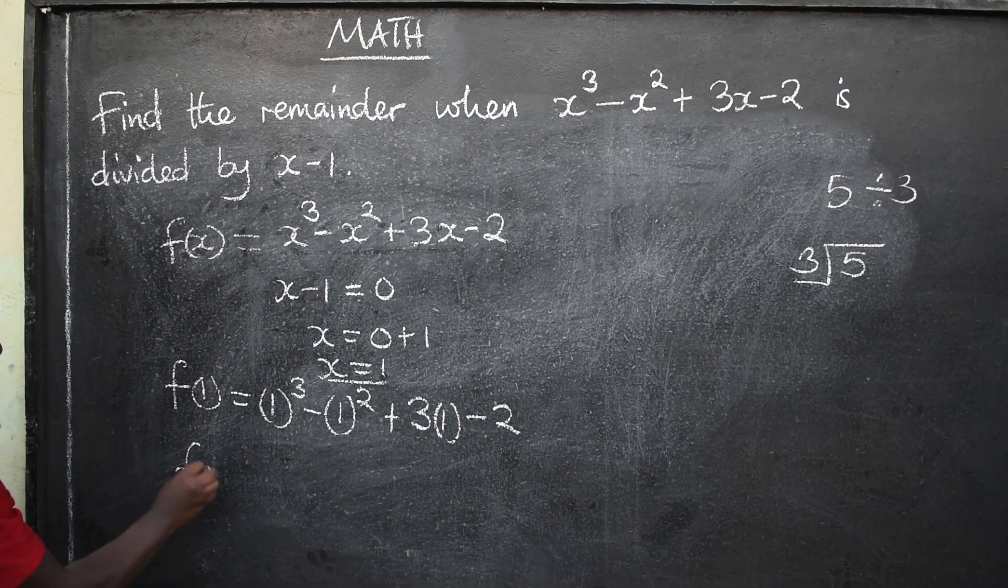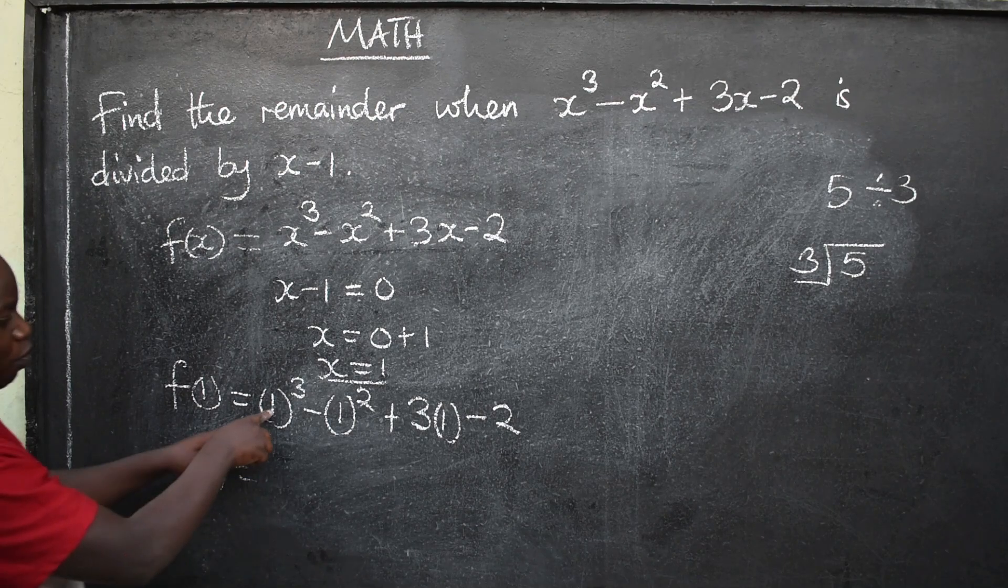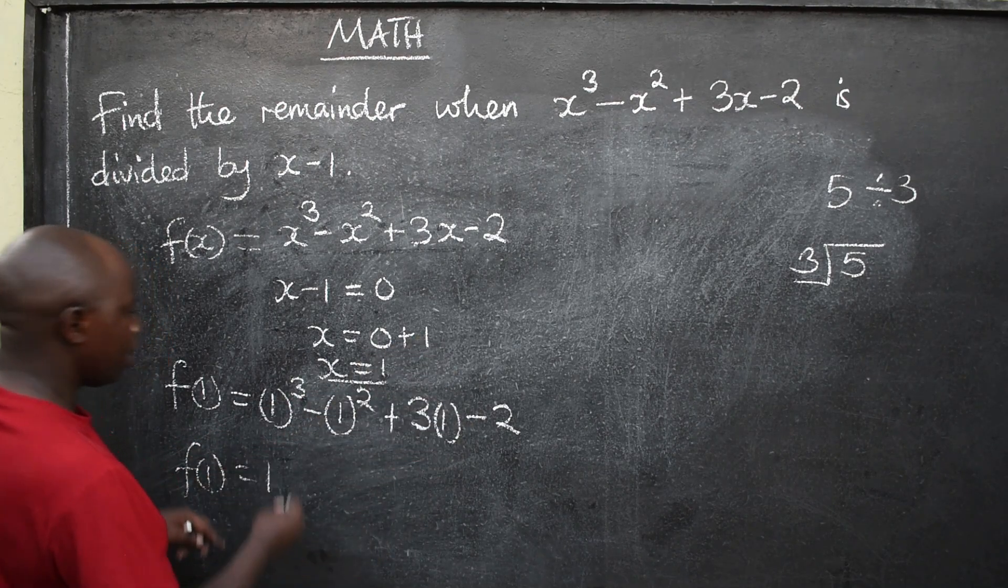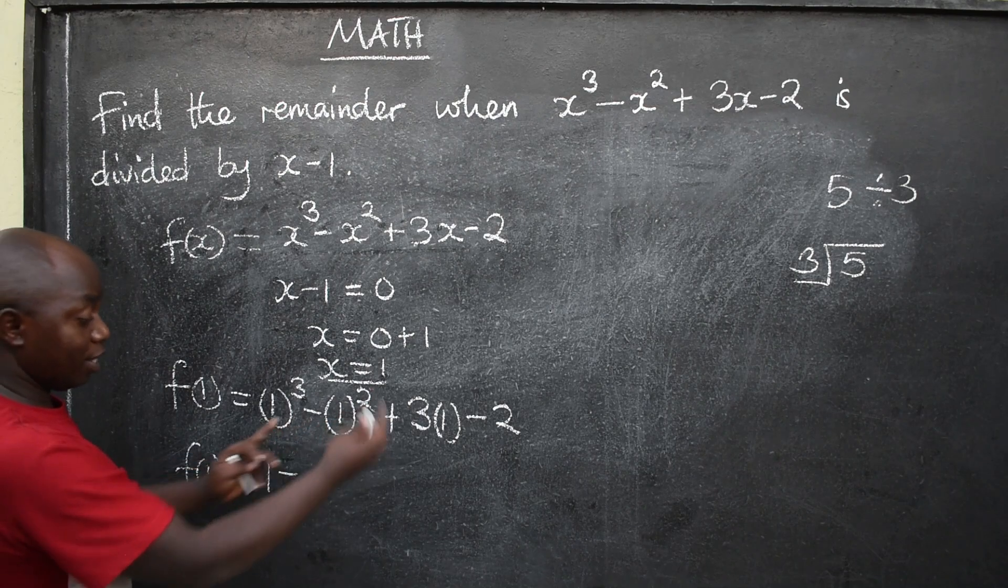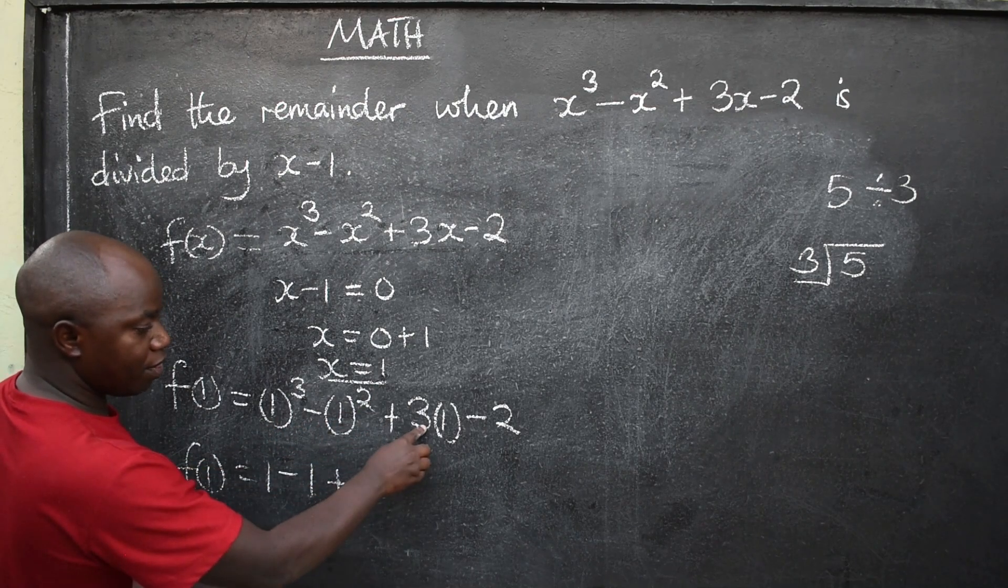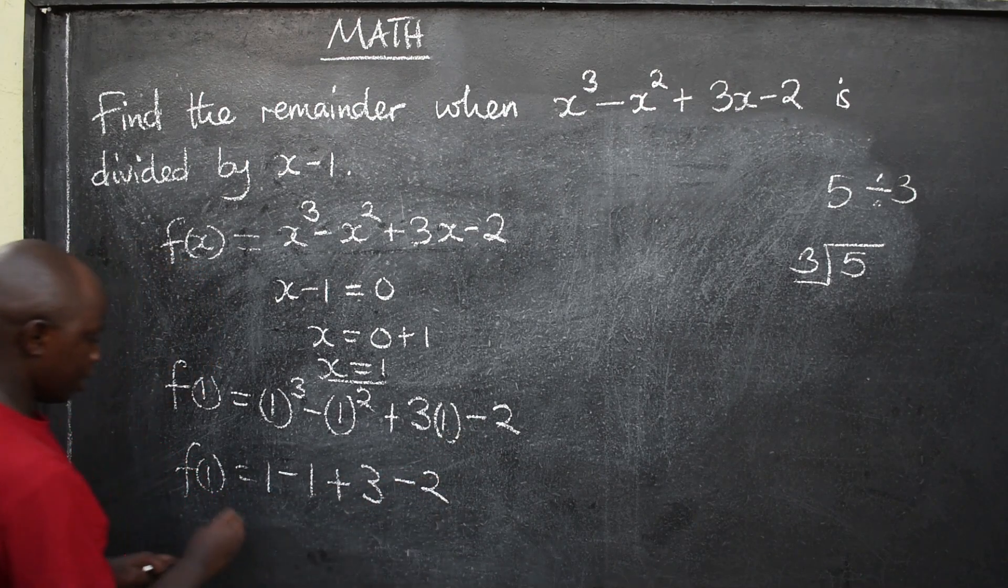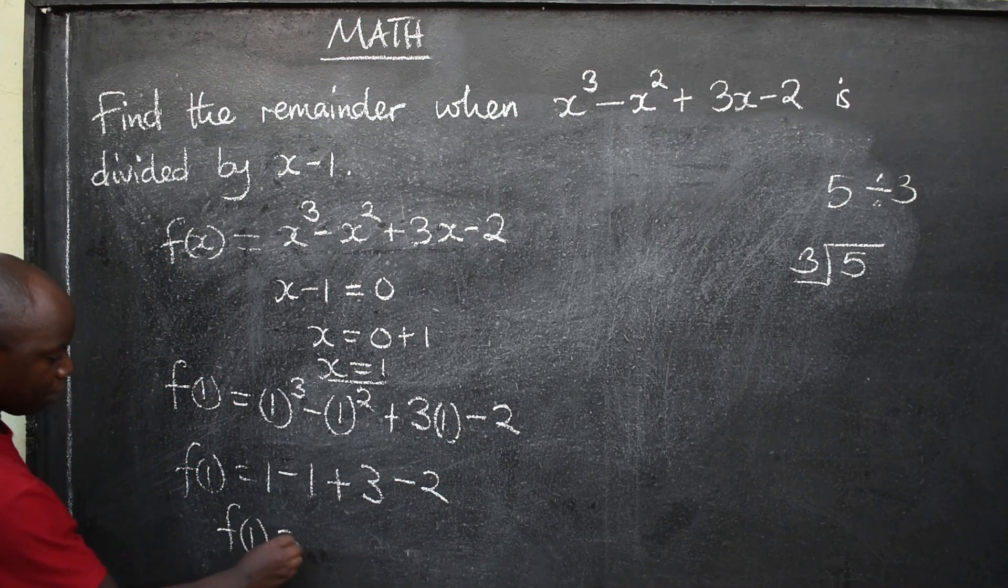Then, let's find the answer here. F1 will be equal to, 1 to the power 3 is 1, that is 1 times 1 times 1, then we have minus 1 squared, will be 1, then I have plus 3 times 1, to be 3, minus 2.